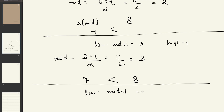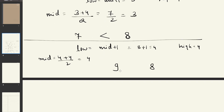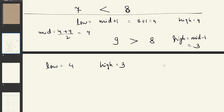Now low = 4, high = 4. Mid = (4+4)/2 = 4. a[4] = 9. Since 9 > 8 (target), high = mid - 1 = 3. Now low = 4 and high = 3. The condition low ≤ high is no longer satisfied, so the binary search stops. Normally we would return -1 to indicate the element was not found.